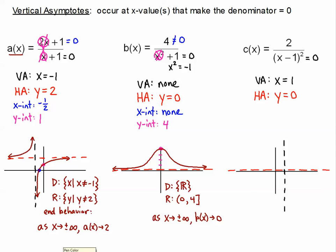Let's do the x-intercept. x-intercepts come from the numerator — we set that equal to 0. Again, 2 can never equal 0, so there is no x-intercept. For the y-intercept, we plug a 0 in for x: the x term becomes 0 and goes away, leaving 2 divided by negative 1 squared. Negative 1 squared is positive 1, so 2 divided by 1 equals 2. We go to the y-axis and plot 2.